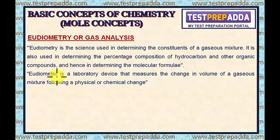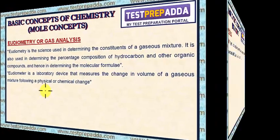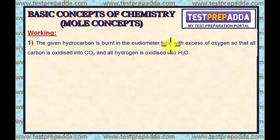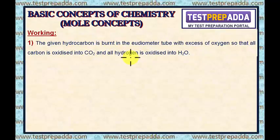Now, what do we do here? How do we find the molecular formula or the percentage composition? The working in eudiometry. First point: the given hydrocarbon is burned in the eudiometer tube with excess of oxygen, so that all carbon is oxidized into CO2 and all hydrogen is oxidized into H2O.